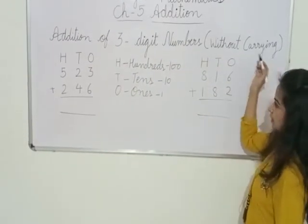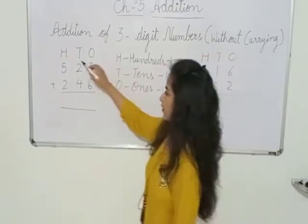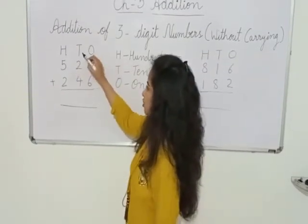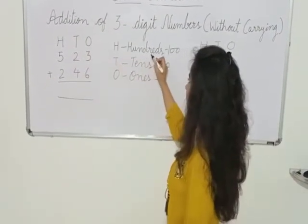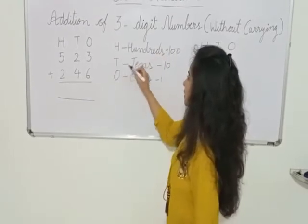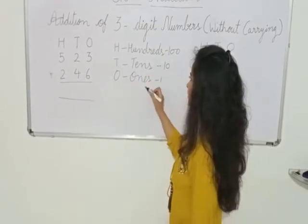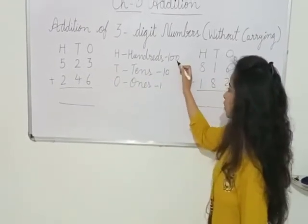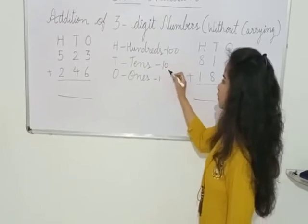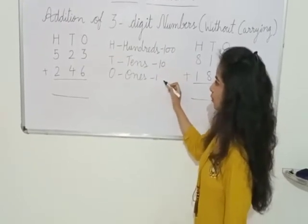Now let's take an example. Here we have written H, T, O. H means hundreds, T means tens, O means ones. In hundreds we put two zeros, in tens there is one zero, in ones there is no zero.